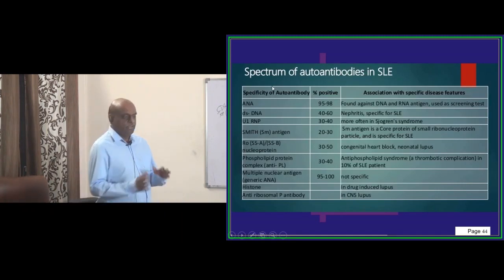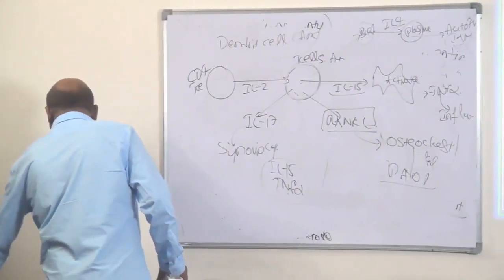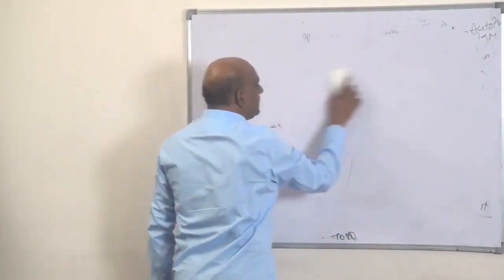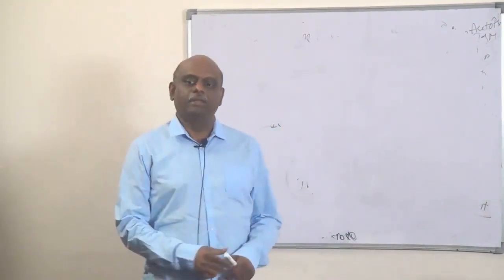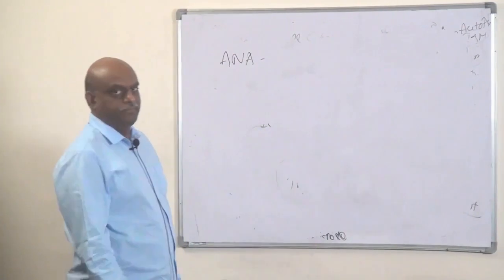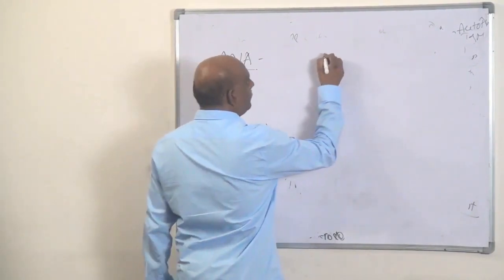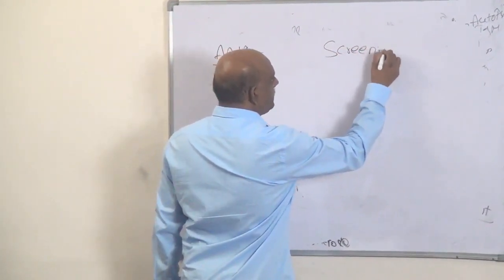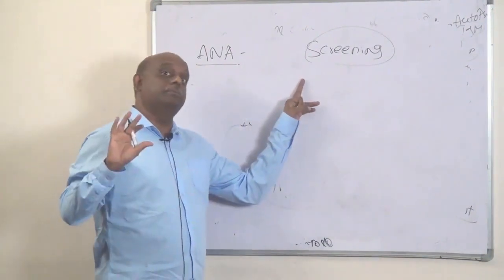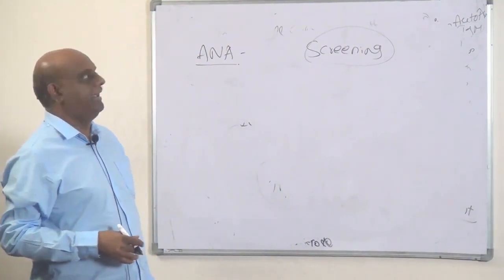Now, I am going to make you expert in the very important topic of auto-antibodies in SLE. You should not forget. ANA (antinuclear antibody) — what is its importance? It can be used as a screening test because of its good sensitivity. A screening test always has high sensitivity, and that is what you see with ANA.